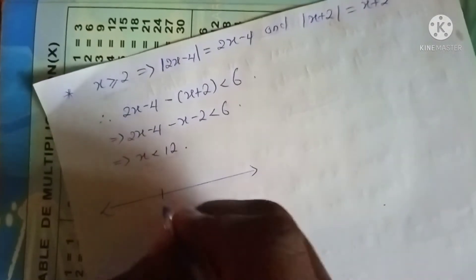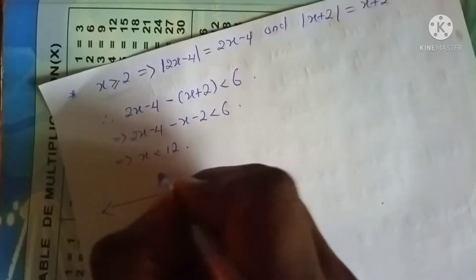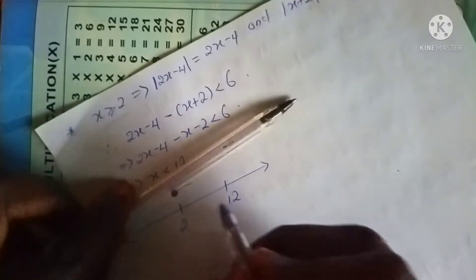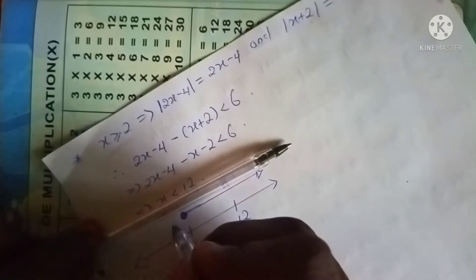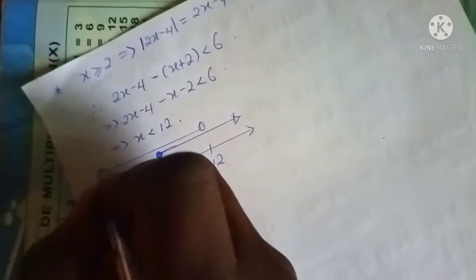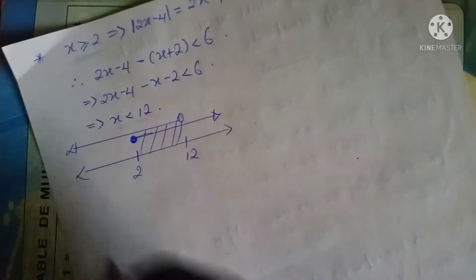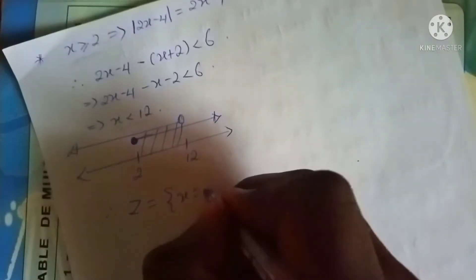On the number line, we have 2 and 12. The first set has x greater than or equal to 2, and we've obtained that only values less than 12 satisfy the inequality. So the intersection — which is our z — gives us the set z: x such that 2 is less than or equal to x which is less than 12.